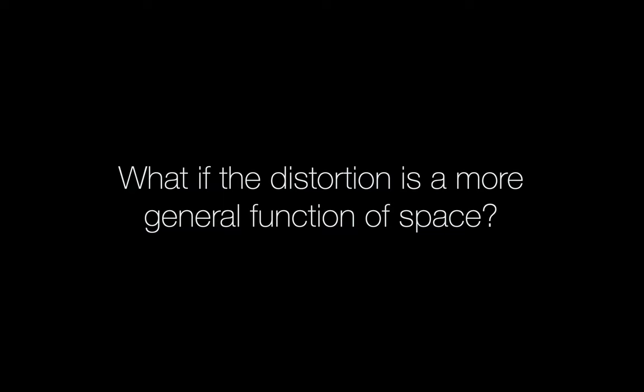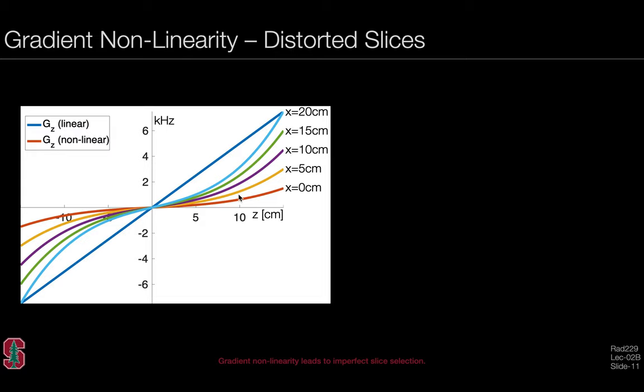What if the distortion is a more general function of space, varying in perpendicular directions as well? It may be the case in the context of a nonlinear gradient that this mapping is a function not only of z, but also of x. We have different nonlinear curves depending on where we are along the x axis as well. This suggests that these nonlinearities are spatially distributed across x, y, and z for a z gradient as well as for an x or y gradient.